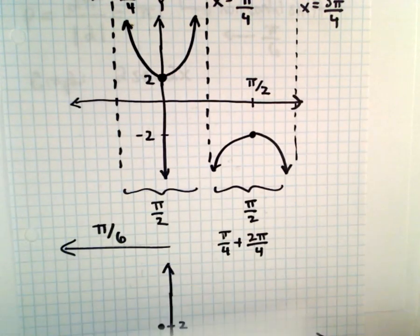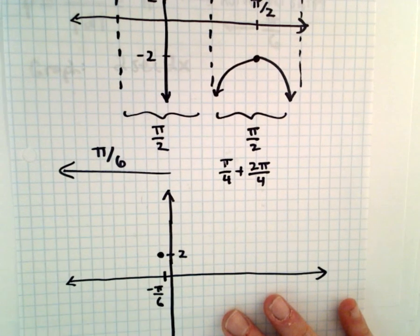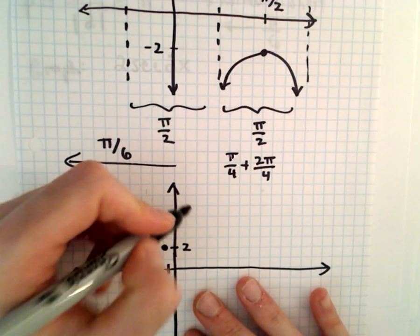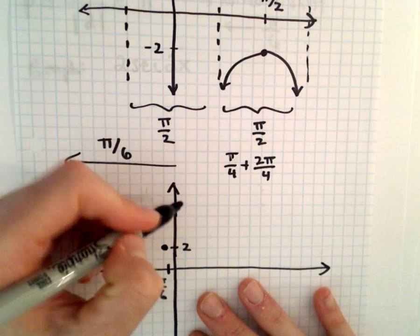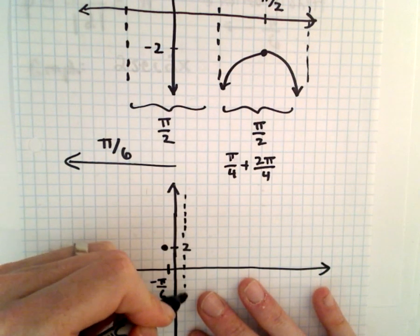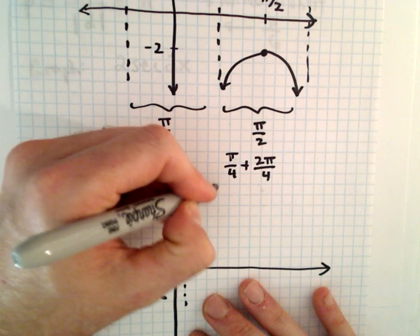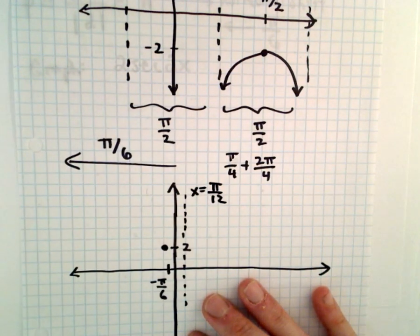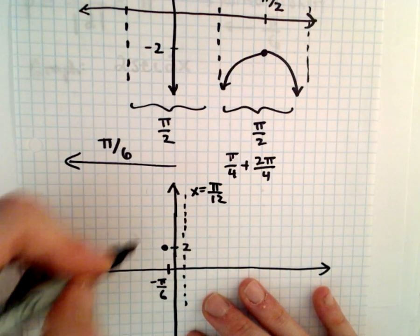So, that'll be the location of two of our asymptotes. The first one we said was at x equals pi over 12. So, I'm just going to put that right there. So, there's x equals pi over 12, and then we said the other one was at negative 5 pi over 12.